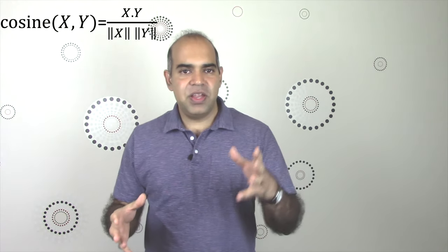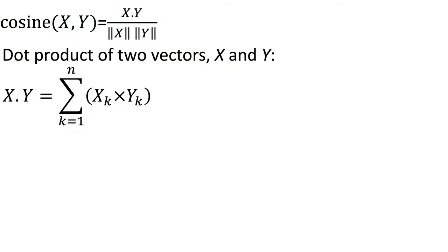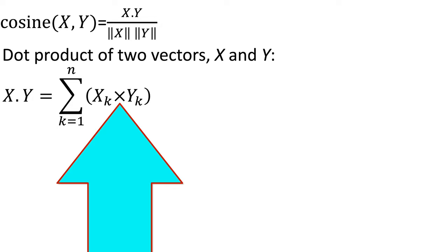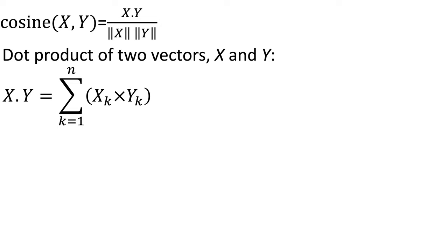The numerator of the equation for cosine similarity contains x dot y. x dot y refers to the dot product of two vectors x and y, each of length n. The dot product of two vectors, or two rows of a dataset, is computed by taking the multiplication of the two vectors in each dimension and then summing them up.